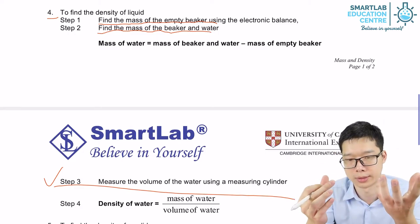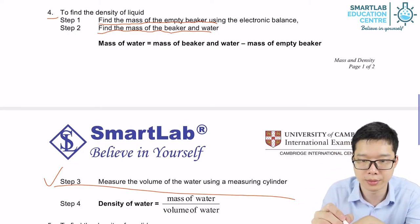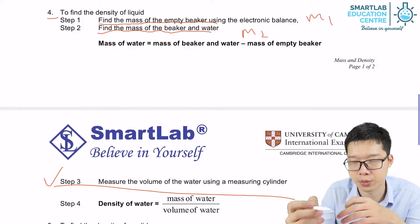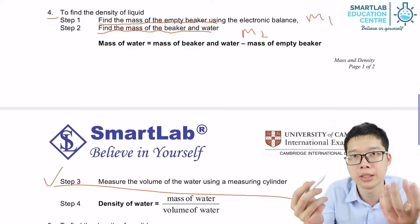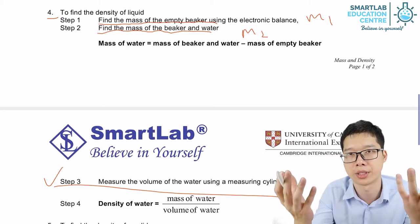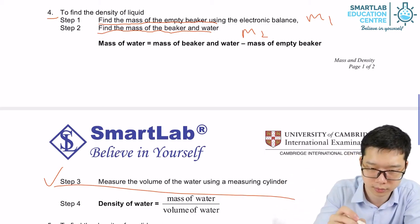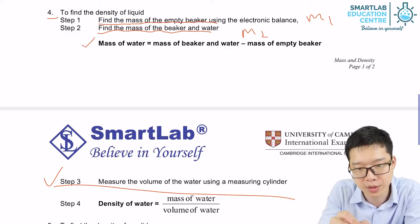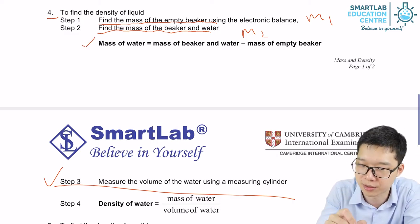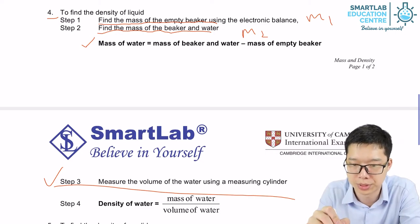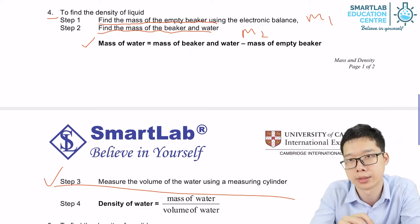So you can see mass one and mass two. The difference between mass two and mass one is actually the mass of the water, because the mass of the beaker won't change. So the mass of water equals the mass of beaker plus water, minus the mass of the empty beaker.